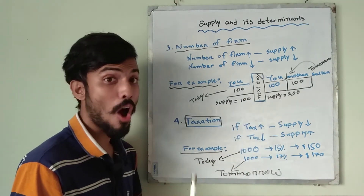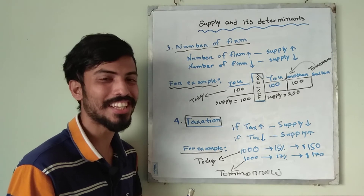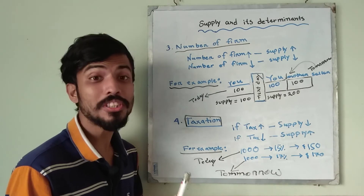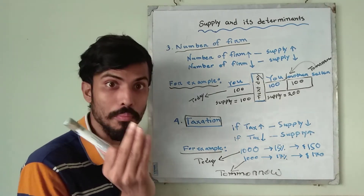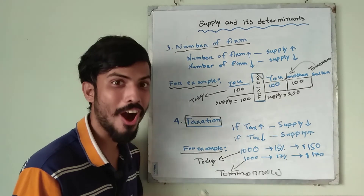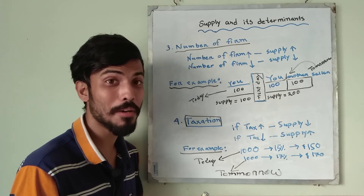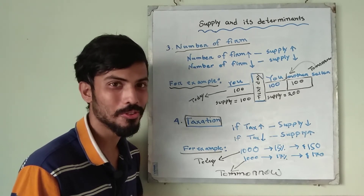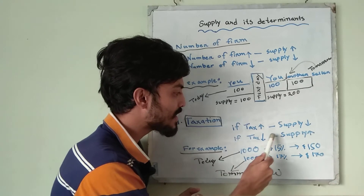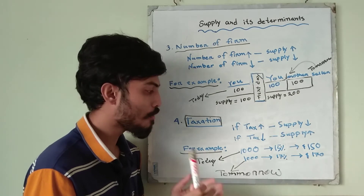Our fourth element is taxation. Taxation means the contribution paid by citizens to the government without receiving any direct benefits. For example, you can see roads outside your house — you are not receiving direct benefits from that development. So whenever tax increases, supply decreases; whenever tax decreases, supply increases.